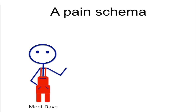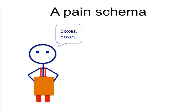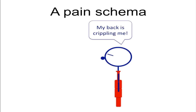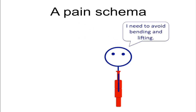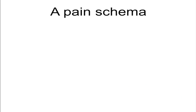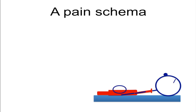Let's watch Dave demonstrate his personal schema for pain. He's at work and he hurts his back again — this happens a lot to Dave. So he goes into his thinking style, one that evolved to keep him safe. Then he feels an emotional response which is in line with his thinking. For Dave it's a sinking feeling in his stomach. Then he follows the script behaviourally — he goes home and he lies down. Then more emotions follow and more thoughts follow the emotions.